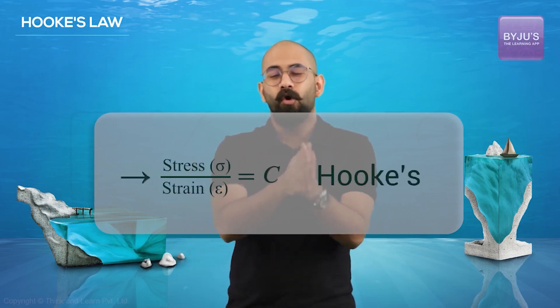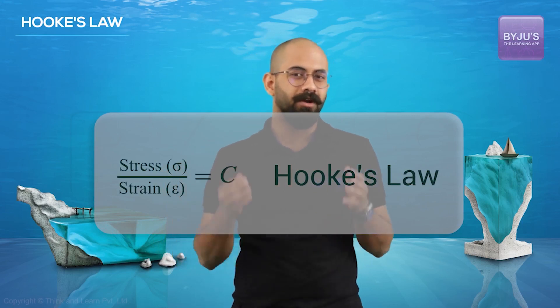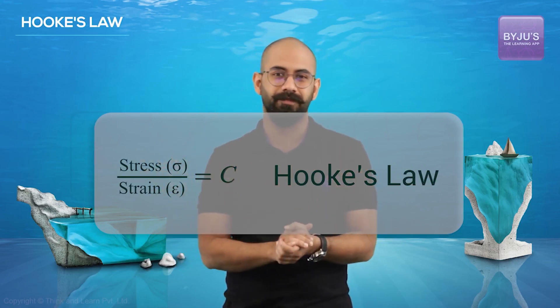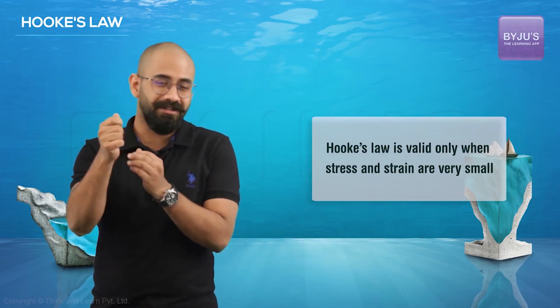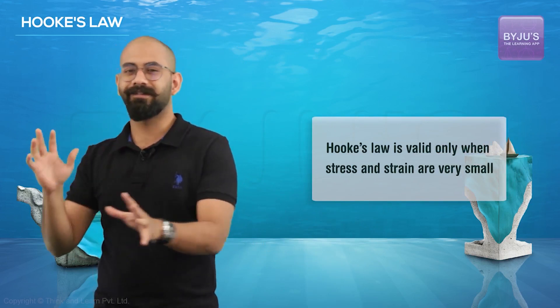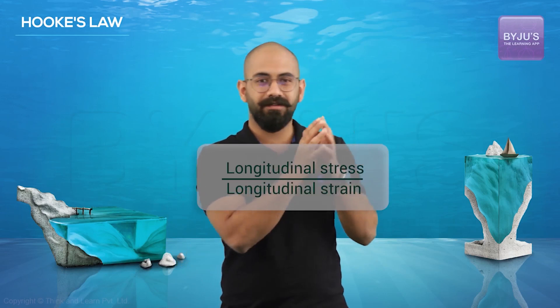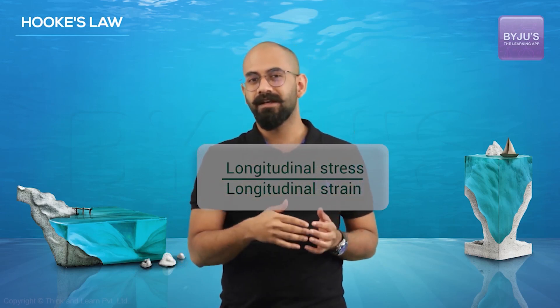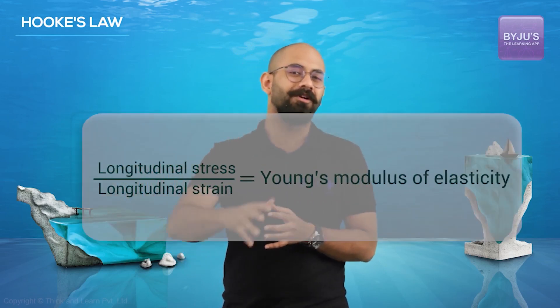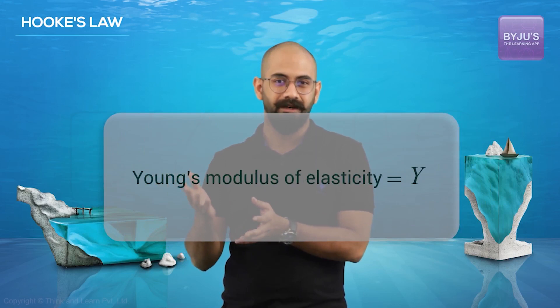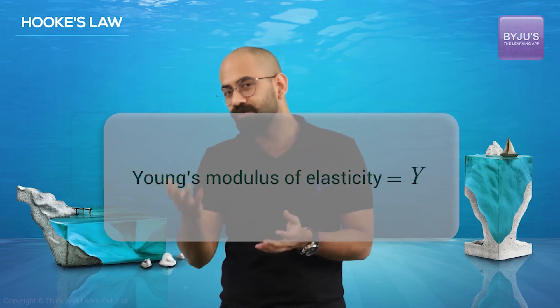This law is called Hooke's Law, initially proposed by Robert Hooke, a contemporary of Isaac Newton. One thing to note: even though it's called a law, stress by strain equals a constant is not valid in all cases — only where stresses and strains produced are very small. When dealing with longitudinal stress and longitudinal strain, that constant is called Young's modulus of elasticity, generally denoted by Y. Its unit is Newton per meter squared, since strain is dimensionless.